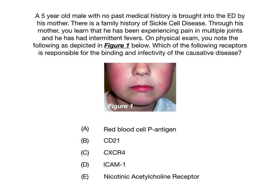A 5-year-old male with no past medical history is brought into the emergency department by his mother. There's a family history of sickle cell disease through his mother. You learn that he has been experiencing pain in multiple joints and he's had intermittent fevers. The question asks which receptor is responsible for the binding and infectivity of the causative disease.